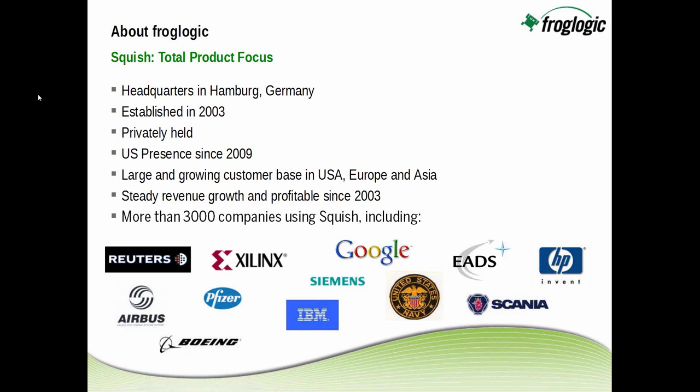FrogLogic was established in 2003, is privately held, and has had a presence in the US since 2009. We have a large and growing customer base throughout the world, with steady revenue growth and have been profitable since establishment. You can see from the icons below some of the more than 3,000 companies currently using Squish GUI Tester.